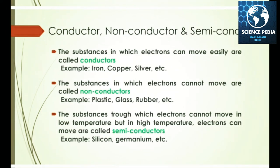Conductors and non-conductors are very important in this chapter. Substances through which electrons can move easily are called conductors — for example, iron, copper, and silver. Substances through which electrons cannot move are called non-conductors — for example, plastic, rubber, and glass.